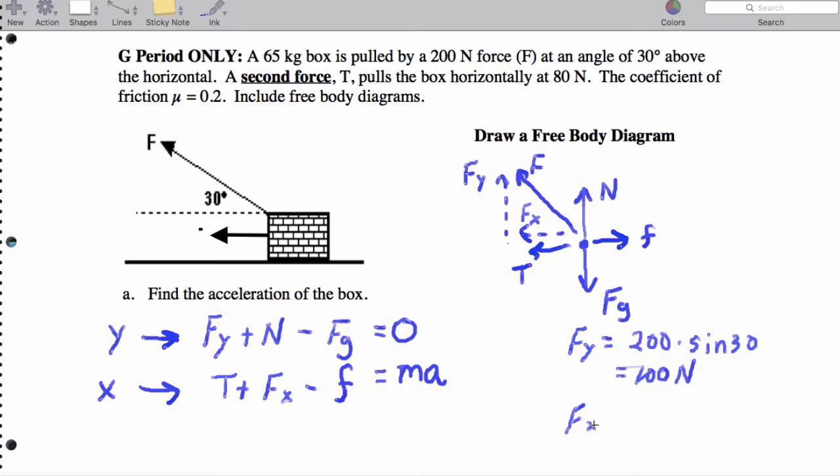And then F_X is going to be 200 times the cosine of 30. Try not to get too worked up about this problem. So, 173 newtons.